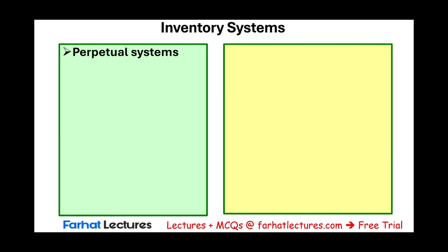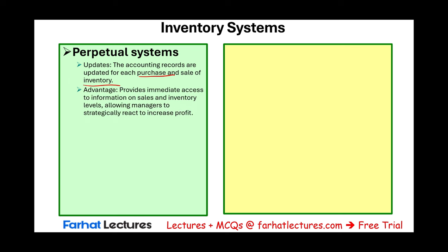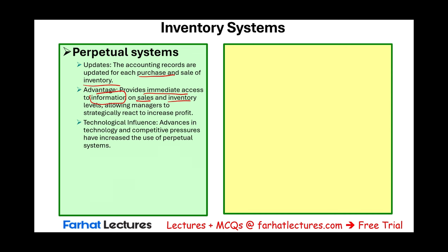The perpetual inventory system is where the accounting record is constantly and continuously updated for each purchase and each sale, providing you immediate access to information on sales and inventory. The manager knows exactly what's happening in real time, which is an advantage. In order to have a perpetual inventory system, you need an advanced computerized system — though perpetual systems are now practically implemented in any major or minor retail store. Advanced technology and competitive pressure have increased the use of perpetual systems. If you don't have a perpetual system, you are at a disadvantage.